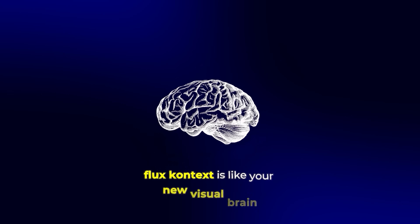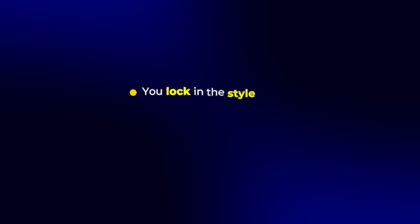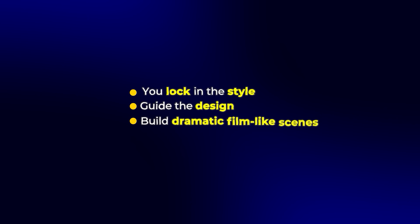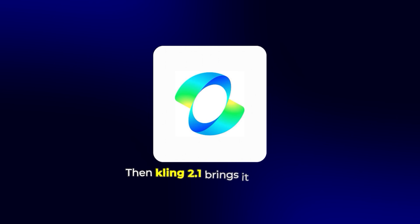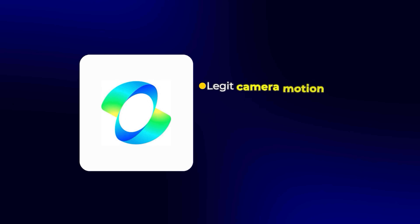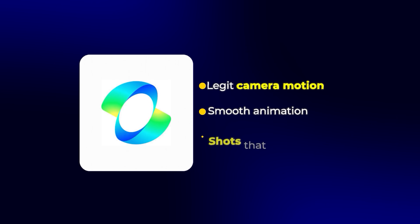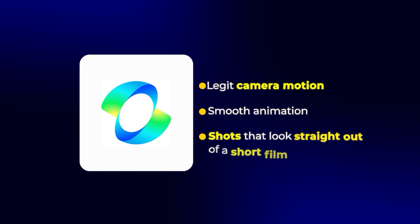Flux Context is like your new visual brain. You lock in the style, guide the design, and build dramatic film-like scenes. Then Kling 2.1 brings it all to life with legit camera motion, smooth animation, and shots that look straight out of a short film.